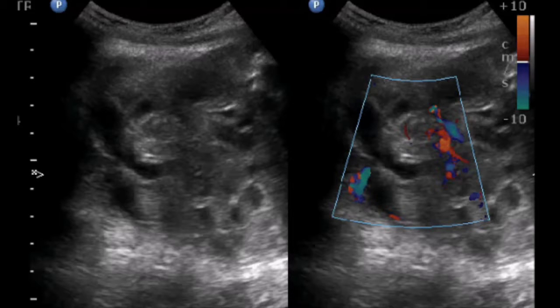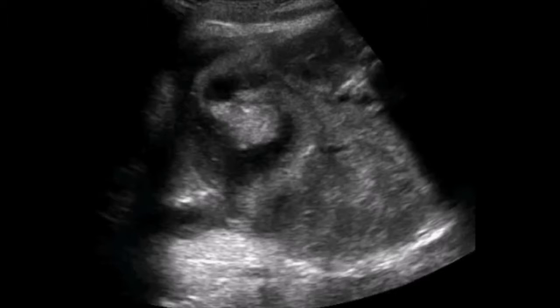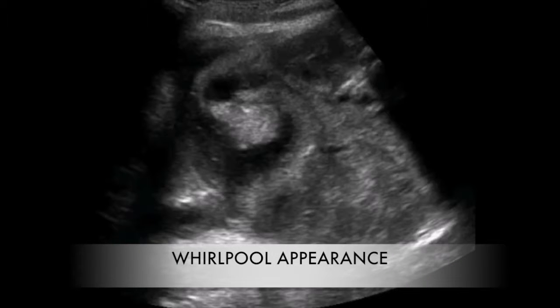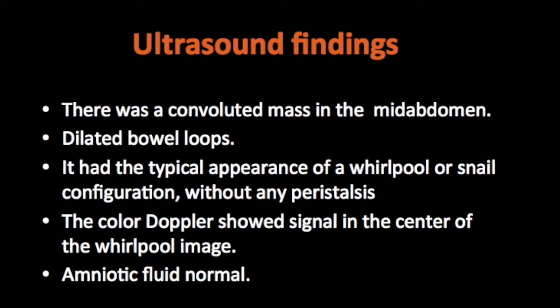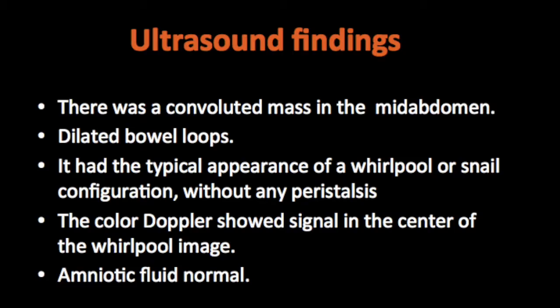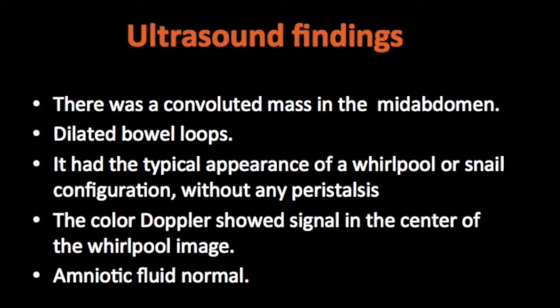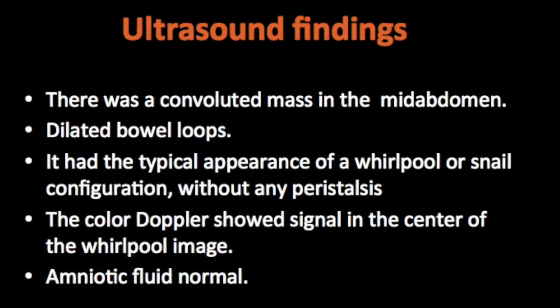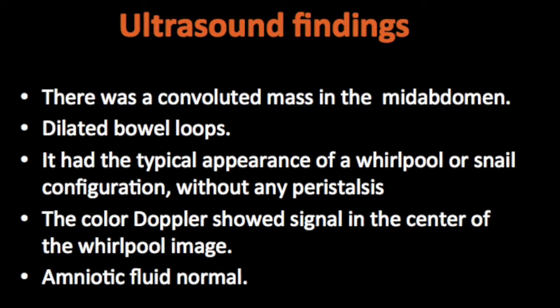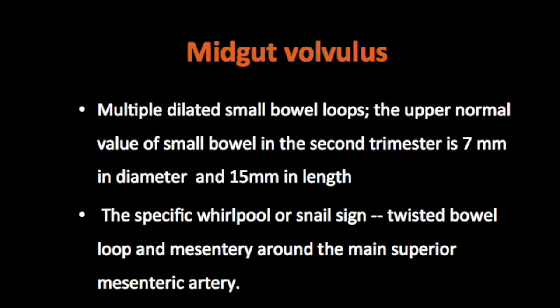So what are the ultrasound findings? There is a convoluted mass in the abdomen. The dilated bowel loops are seen. It shows a typical appearance of a whirlpool or snail configuration without any peristalsis. The colour Doppler showed signal in the center of the whirlpool image, which may indicate that there are less chances of bowel necrosis in this case. The amniotic fluid was normal. So this was a typical case of midgut volvulus.